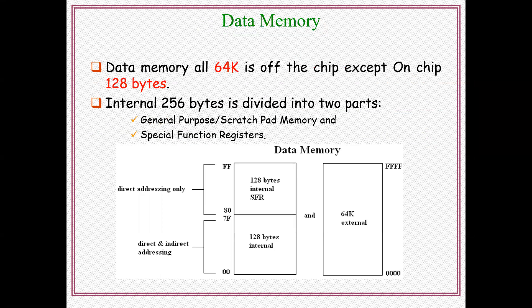Internal data memory is 256 bytes, divided into two portions: the lower 128 bytes and the upper 128 bytes, which is reserved for special function registers. Special function registers can be accessed using direct addressing only, while the lower 128 bytes can be accessed using both direct and indirect addressing. External memory supports 64KB RAM, selected with the EA bar signal. If EA bar equals zero, external RAM is selected; if EA bar equals one, internal RAM is selected.